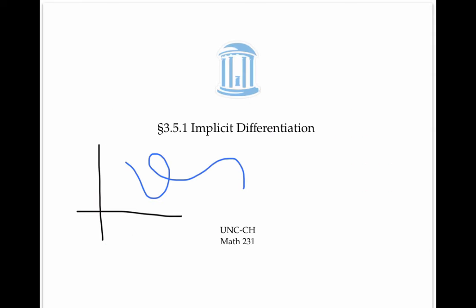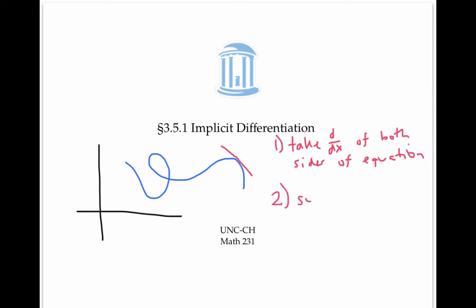This video covered implicit differentiation for finding slopes of tangent lines for implicitly defined curves. The main two steps are: first, take the derivative of both sides with respect to x, and then solve for dy/dx.